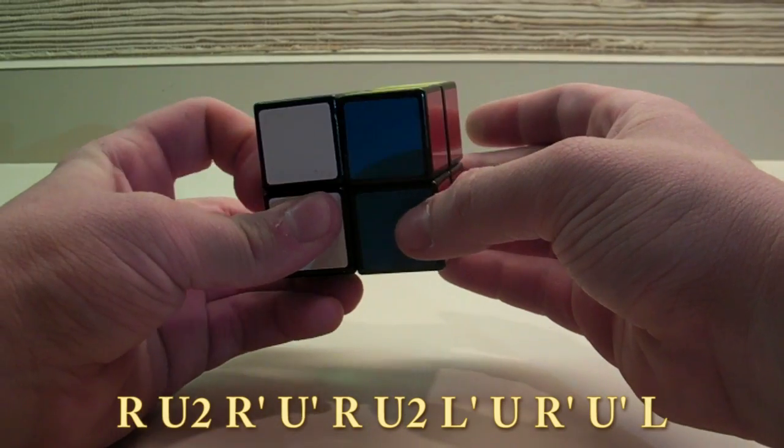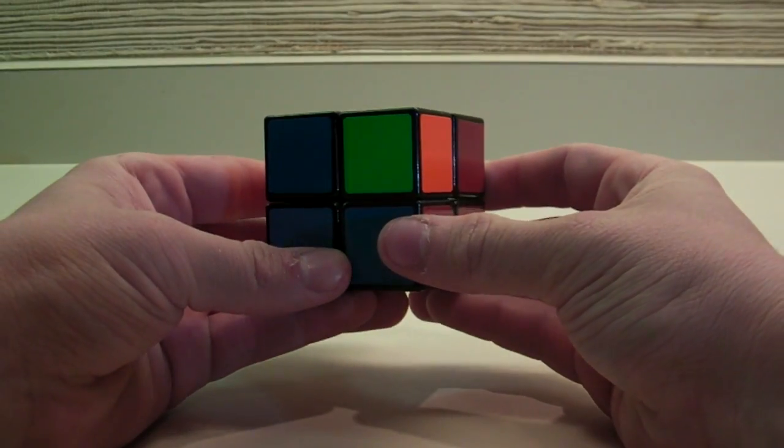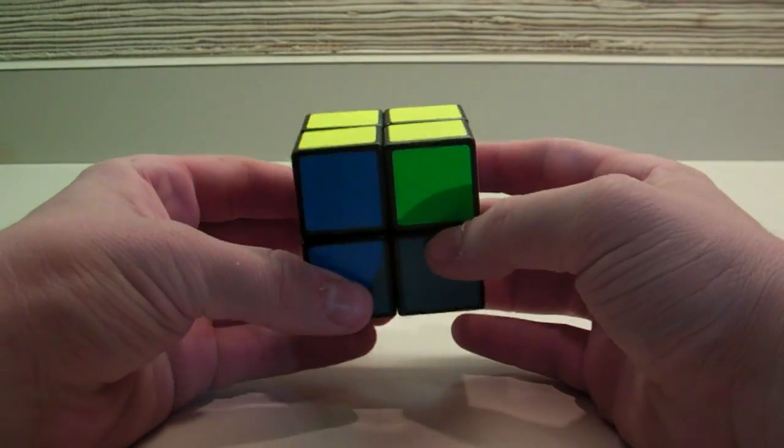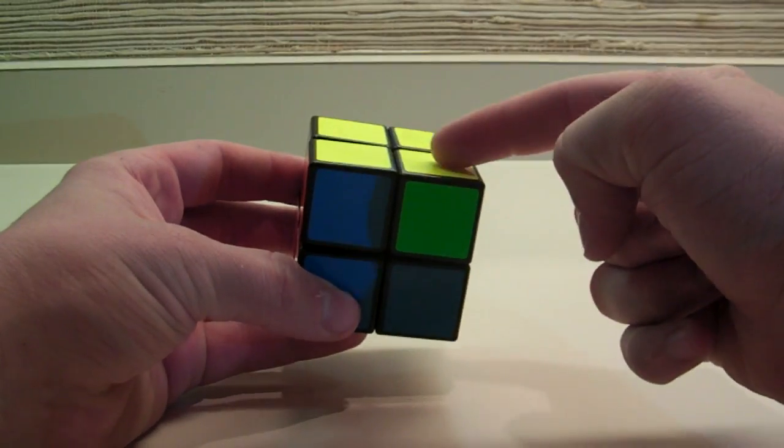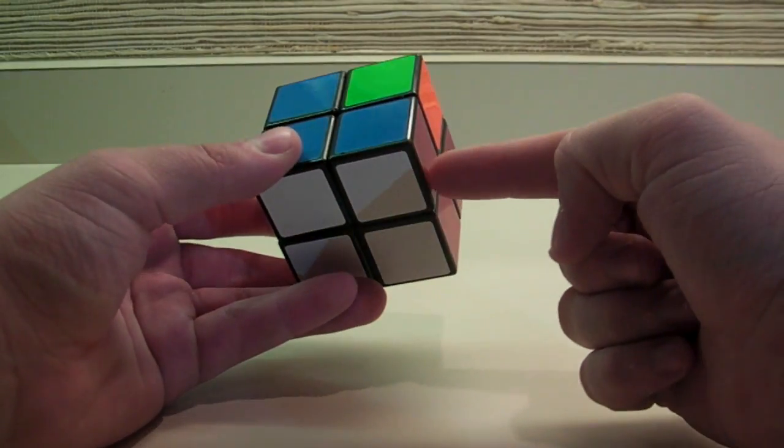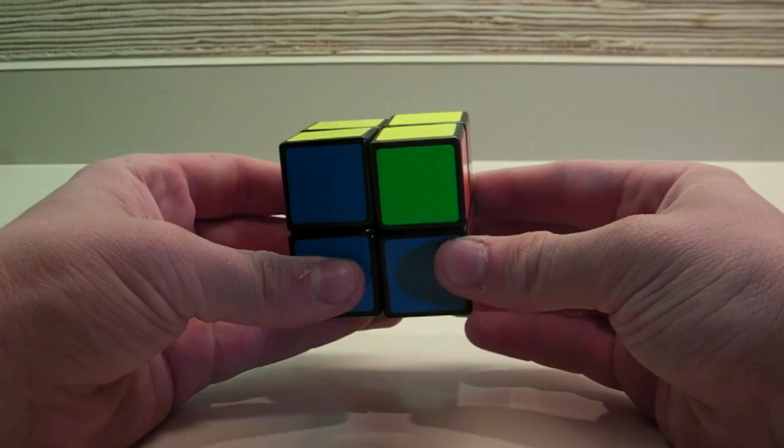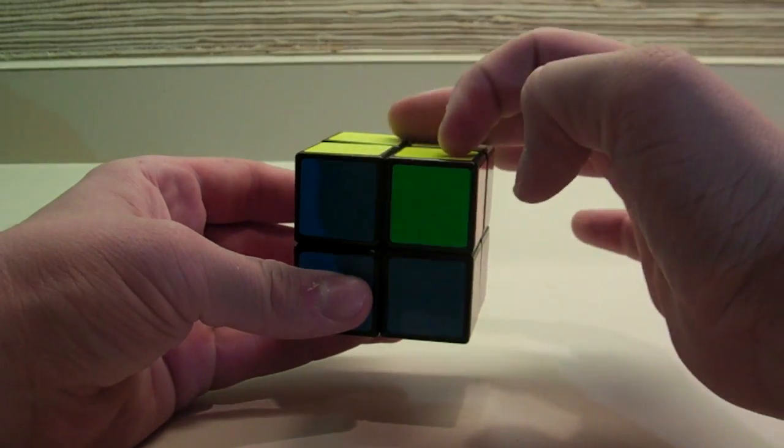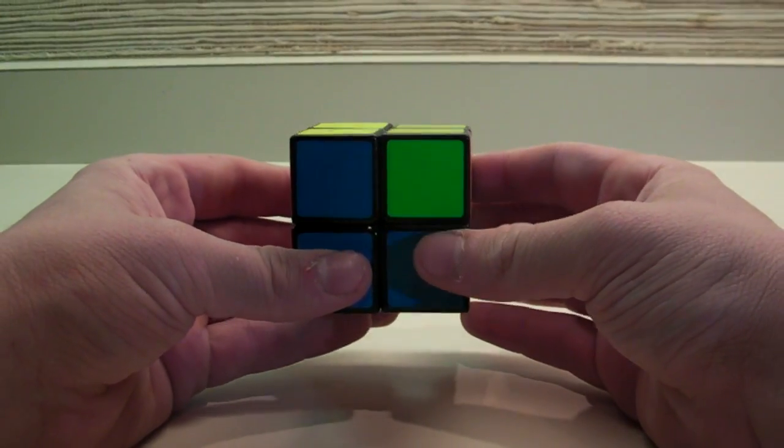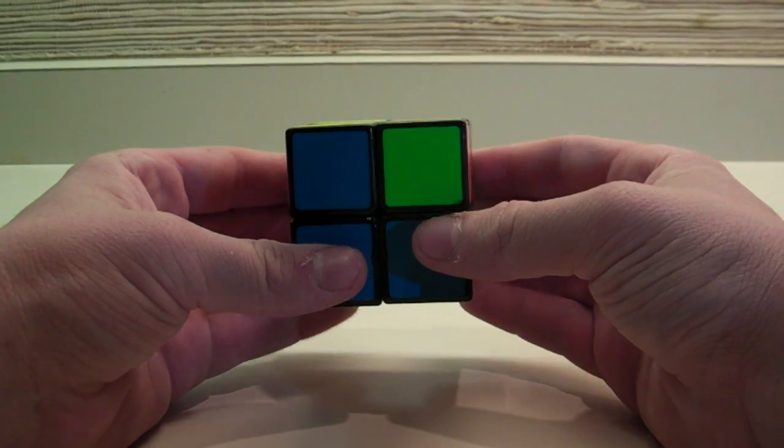And the fifth and final case you can get is where the top face has two opposite corners that need to be switched, and the bottom face is solved. You can solve this either by doing the Y permutation, or any PLL that will switch two opposite corners, or you can use the following algorithm.